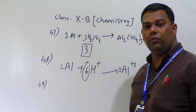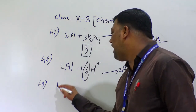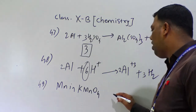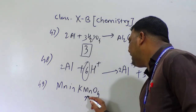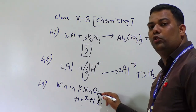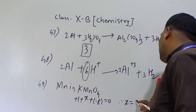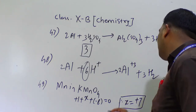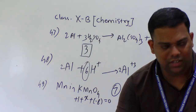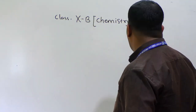Question number 49: what is the oxidation number of manganese in KMnO₄? Let x be the oxidation number of Mn. Potassium is plus one, oxygen is minus two times four equals minus eight. So plus one plus x minus eight equals zero, therefore x equals plus seven. In numeral type questions, type only 7.